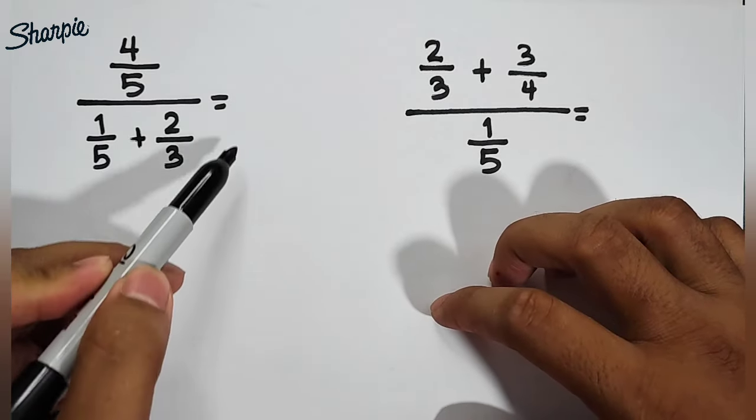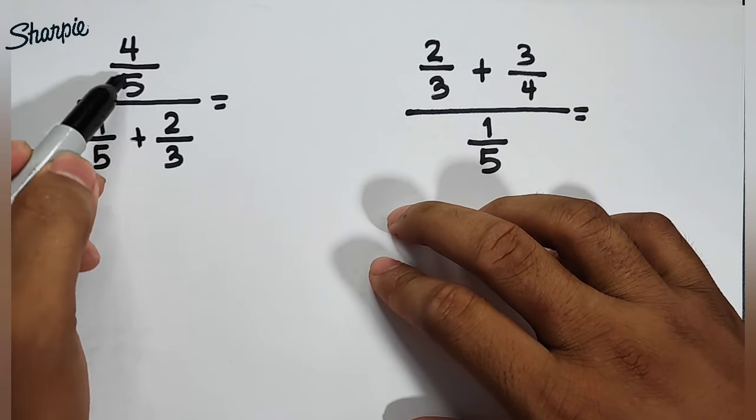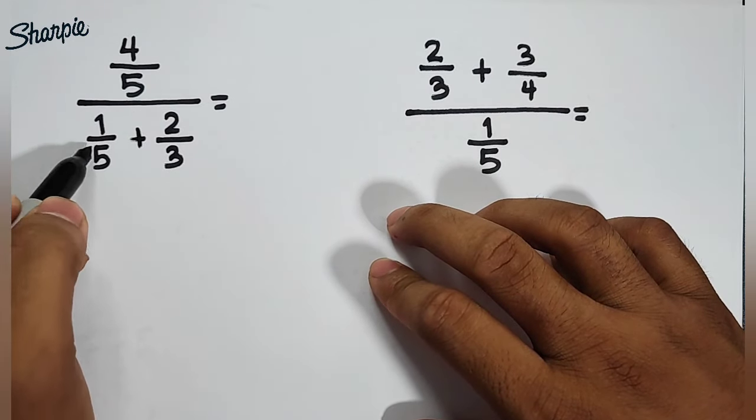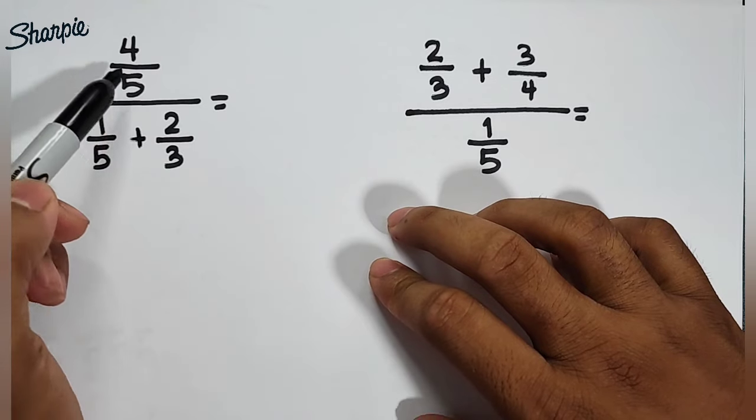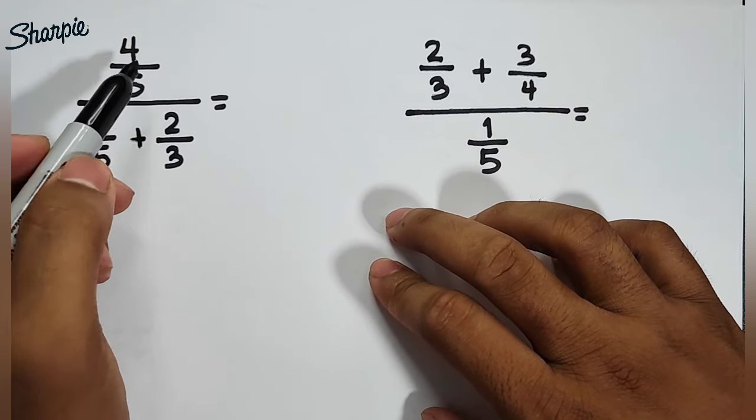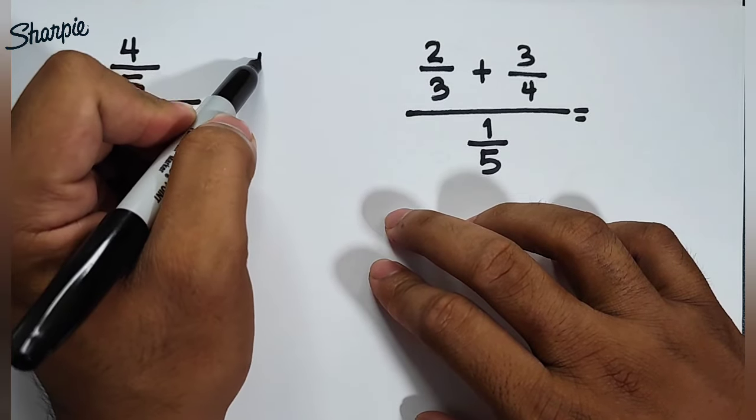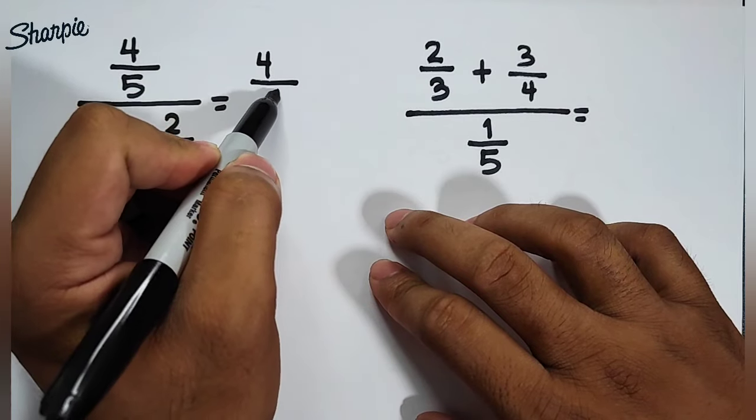Now let us continue with this second example. We have 4 over 5 all over 1 over 5 plus 2 thirds. So as you can see, in the numerator we only have 4 over 5, so we will copy that. So 4 over 5.